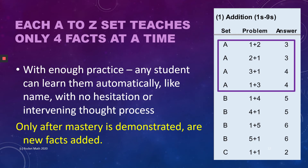Each of those 26 A-to-Z sets only introduces four new facts. As you can see, set A has 1 plus 2 and 2 plus 1, 3 plus 1 and 1 plus 3. With only four facts to learn, any student can learn them automatically, like they know their name, without any hesitation or intervening thought process. By the way, that is automaticity. And only after mastery is demonstrated does the game introduce new facts to be learned.